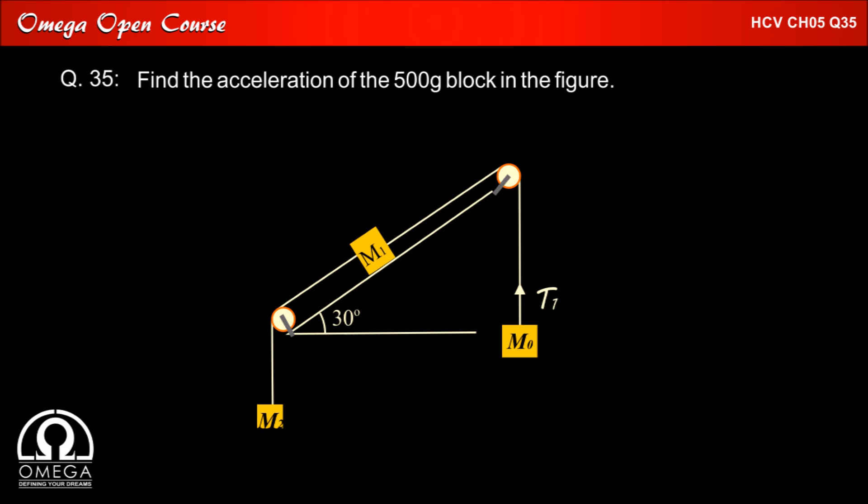Now suppose the tension in the string pulling block M0 is T1. Since tension in the string is the same throughout, block M1 is being pulled up the incline by tension T1. Similarly, if tension in the string pulling M2 is T2, block M1 is being pulled down the incline by tension T2.